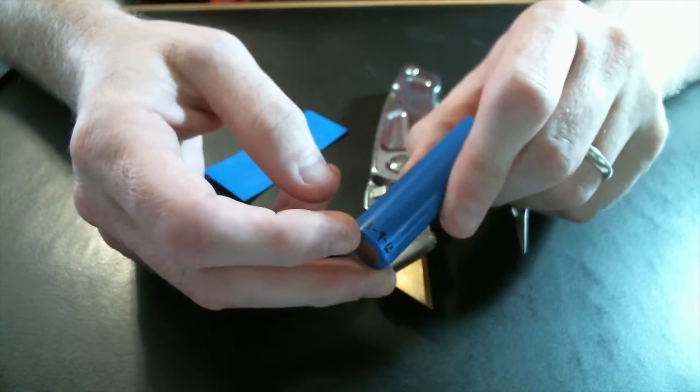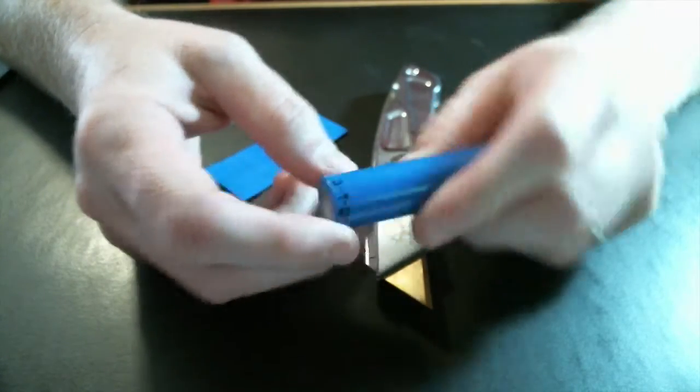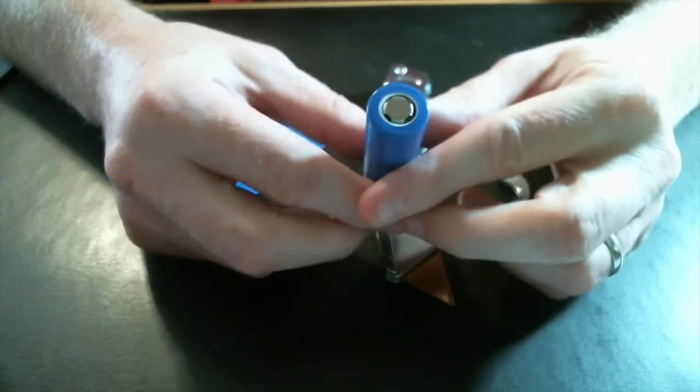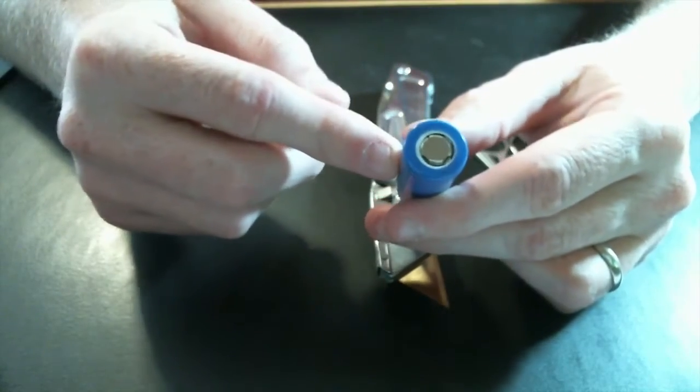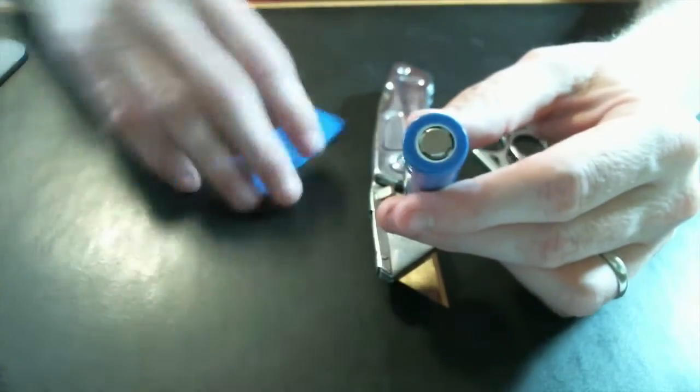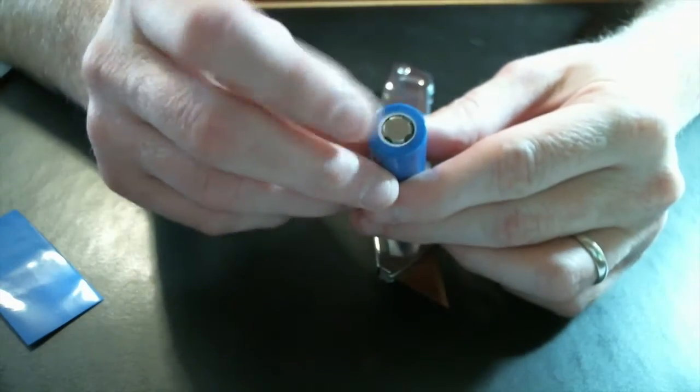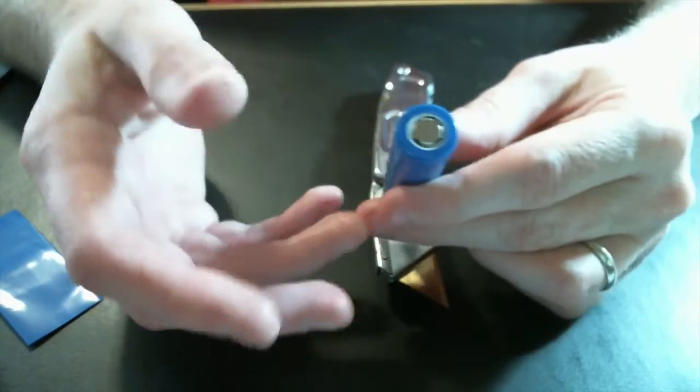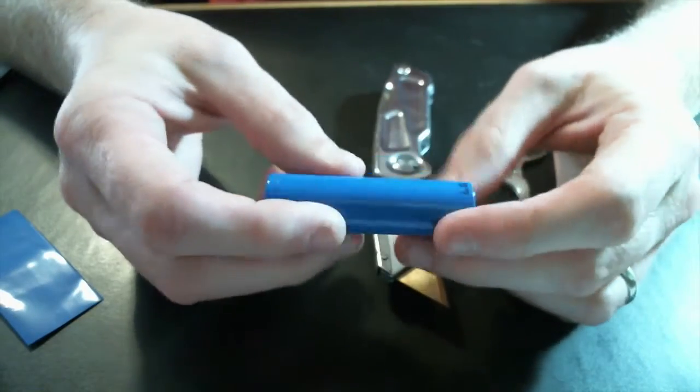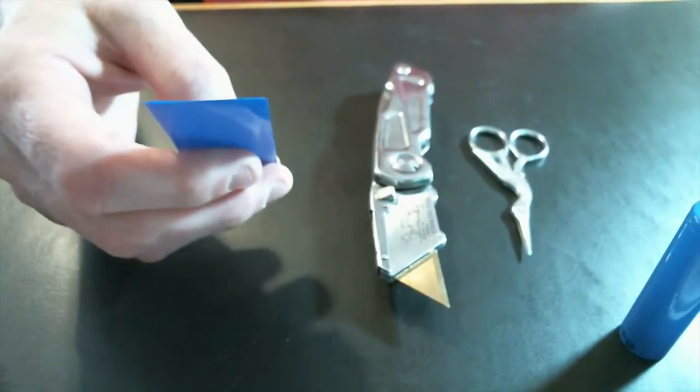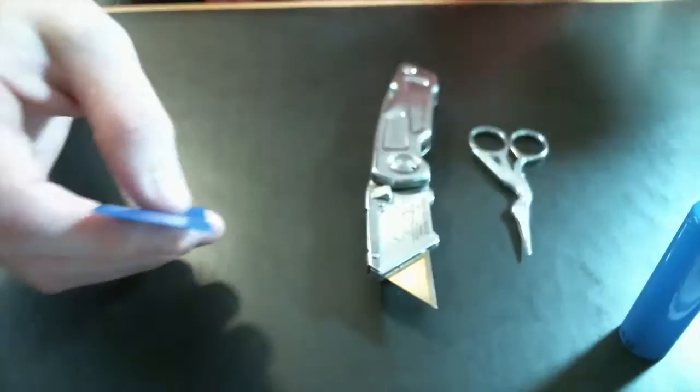The only reason why I rewrapped them is because these batteries, which were white before, the top just started getting torn up from taking them in and out. You can get these wraps in pairs for like two dollars. You can get a whole bunch of different colors, you can even get translucent ones, which I don't really use.